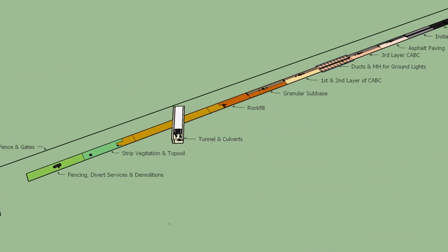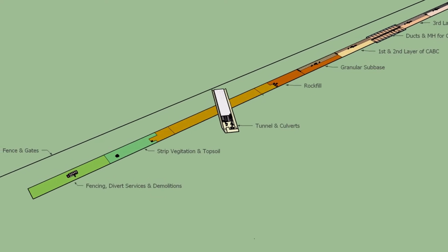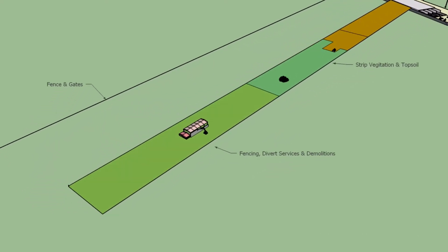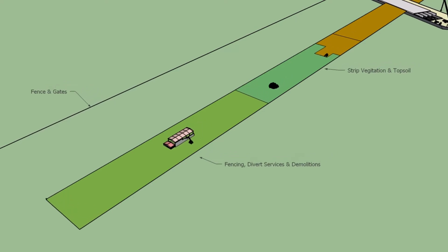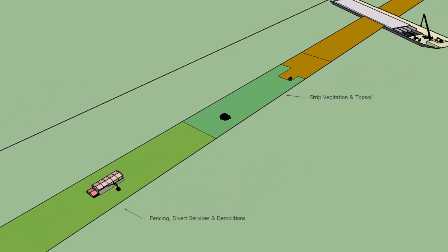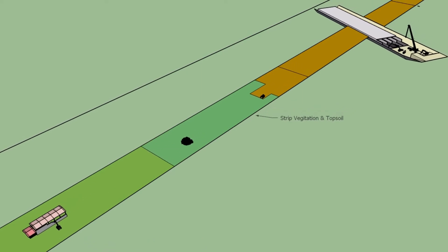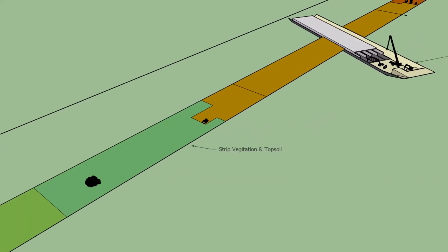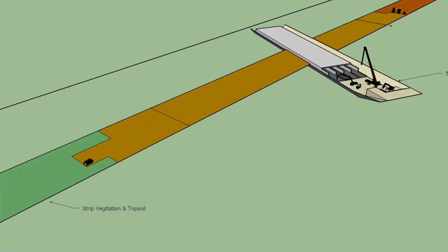The sequence of work activities are as follows. Fence off the area and provide access gates and security huts. Divert underground services. Demolish any structures. Strip vegetation and topsoil and remove.